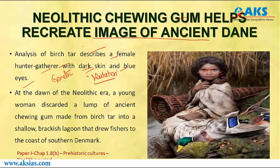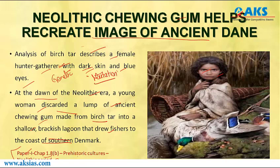Whatever skin color, eye color, or hair color we have, we should celebrate it — everyone in this world is unique in their own way. At the dawn of the Neolithic era, a young woman discarded a lump of ancient chewing gum made from birch tar into a shallow brackish lagoon on the coast of southern Denmark. This falls under Paper 1, Chapter 1b, which covers prehistoric culture including the Neolithic period. The DNA strands preserved in the gum point to a hunter-gatherer from continental Europe with dark skin, dark hair, and blue eyes who lived near the lagoon about 5,600 years ago, confirmed by carbon dating.